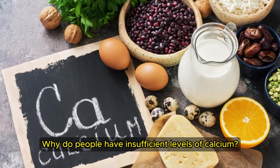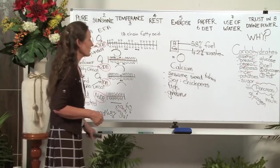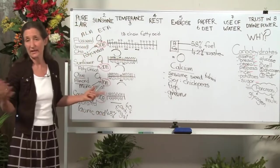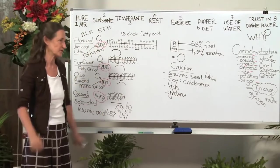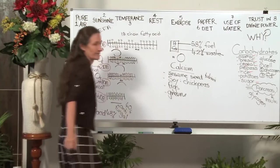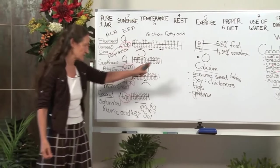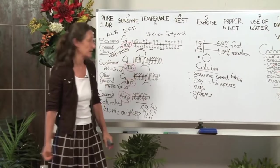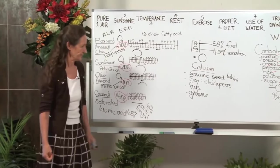Why do people have insufficient levels of calcium? Most people lack calcium because they lack vitamin D. They're not having the sunshine. Or they're taking things that leach the calcium. Caffeine leaches calcium. Sugar leaches calcium. So can you see, you have to look at the whole picture.